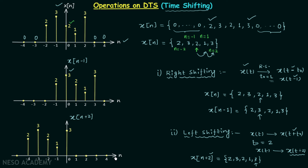So I hope the whole process is clear. You now understand how to represent discrete time signals, the meaning of the arrow notation, and how to perform right shifting and left shifting on a discrete time signal. This is all for this lecture.